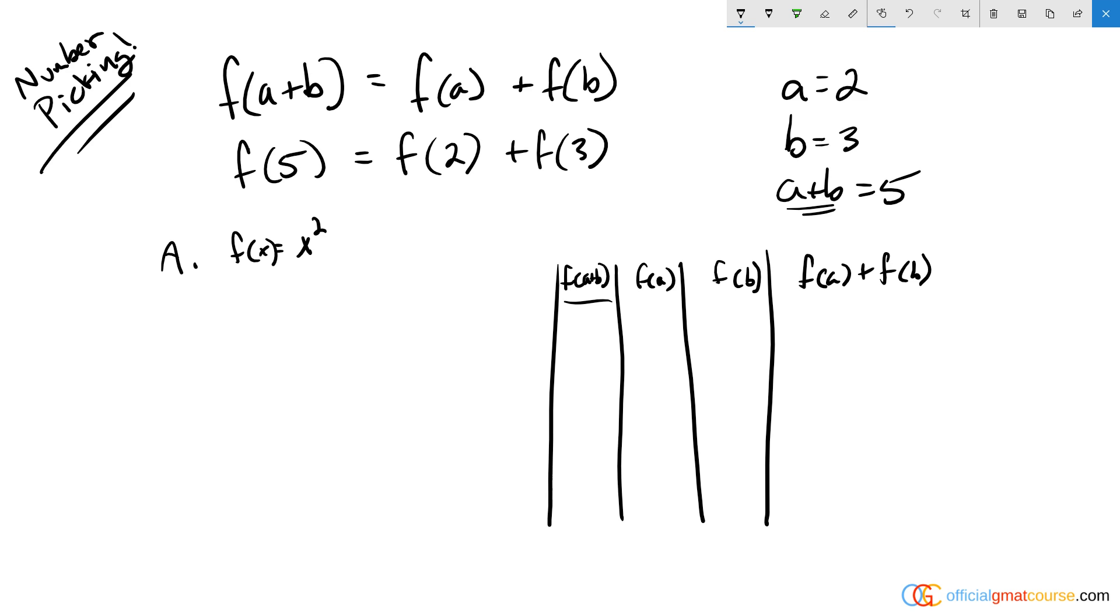I want to compare the first column and the last column. So f of five in this situation is going to equal five squared. Whatever goes in place of the parentheses is going to go in place of x. So we're going to get five squared, which is equal to 25.